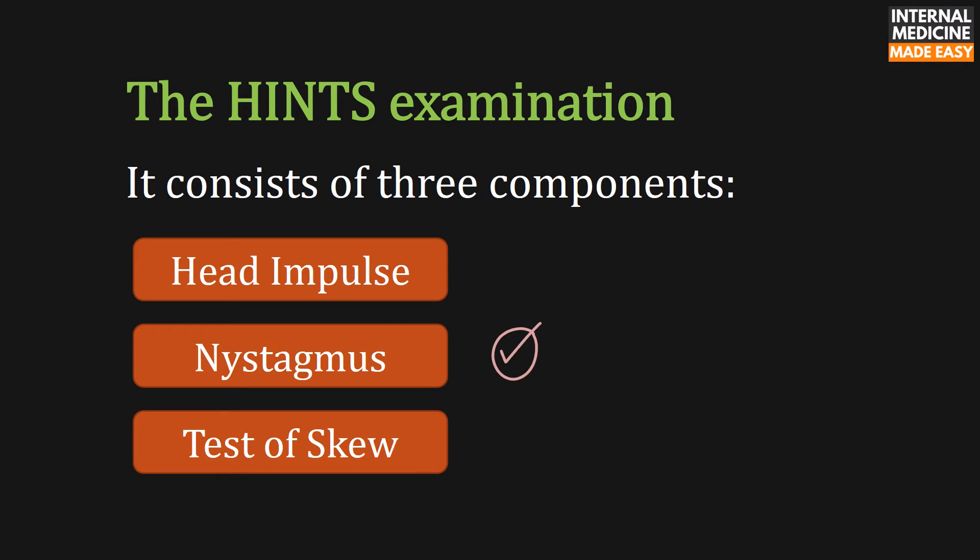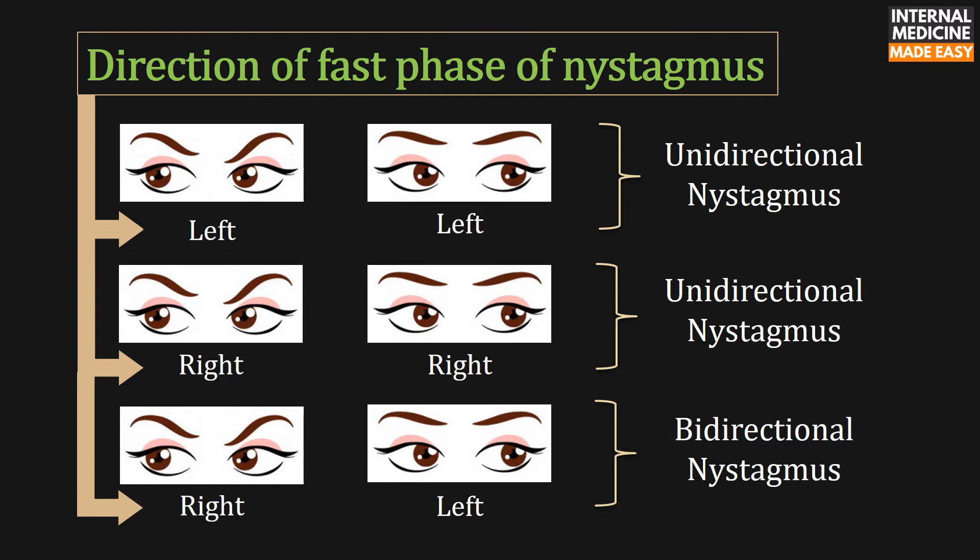Now we will discuss nystagmus. According to the direction of the fast phase of nystagmus, there are two types: unidirectional and bidirectional. If the nystagmus is only to the left or only to the right, it is unidirectional nystagmus. But if the nystagmus is to the right upon right lateral gaze and to the left upon left lateral gaze, then it is bidirectional nystagmus.